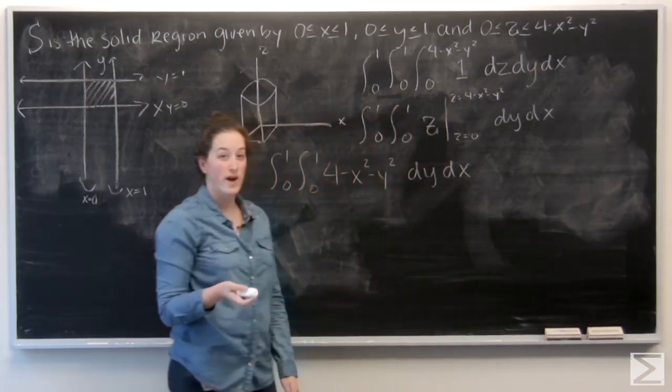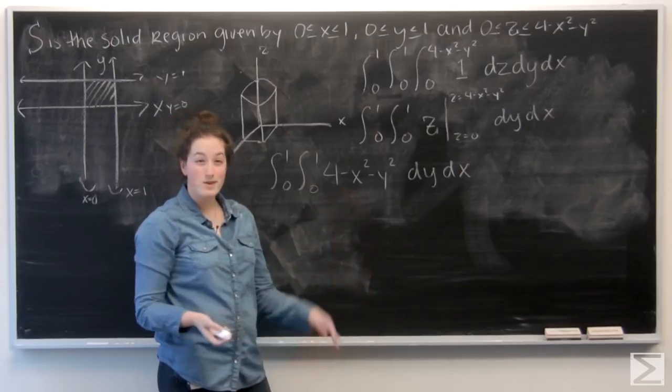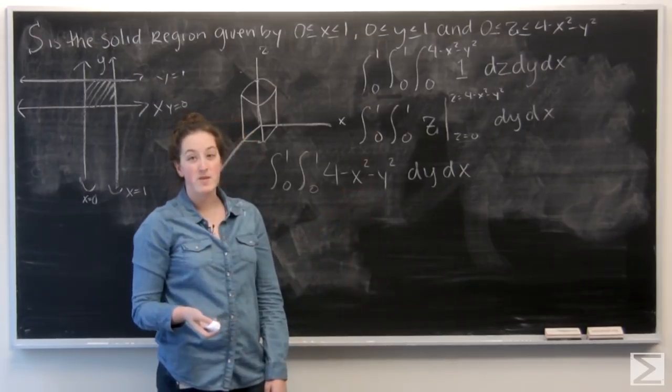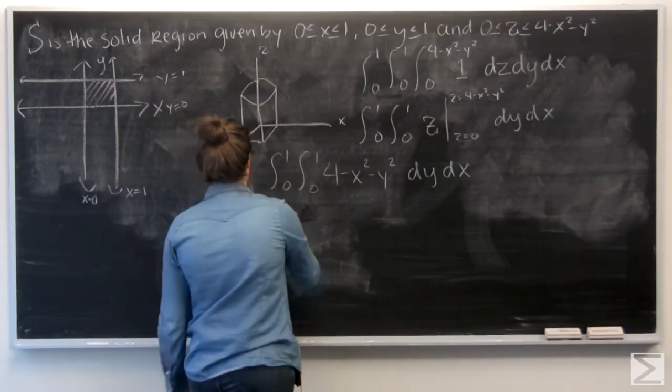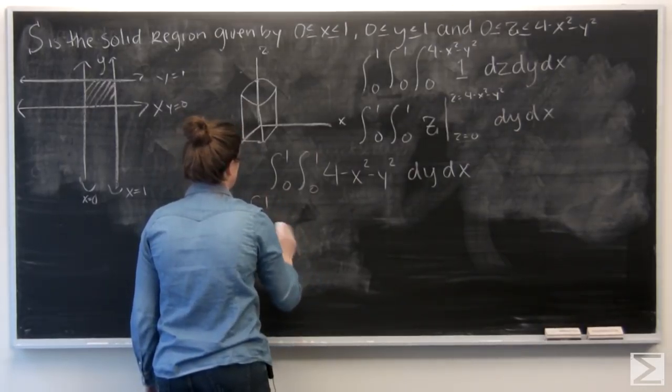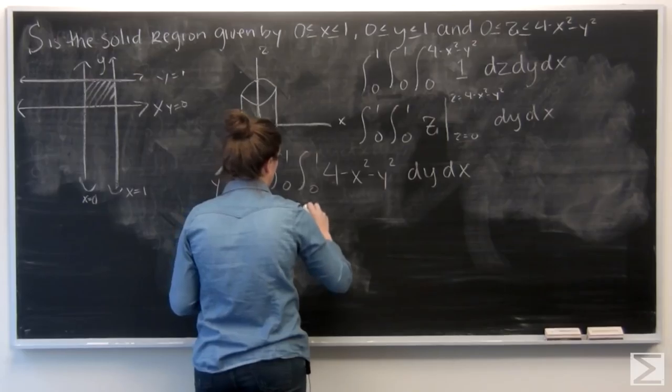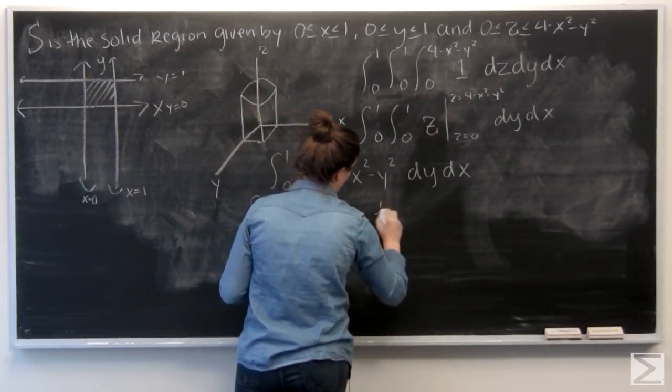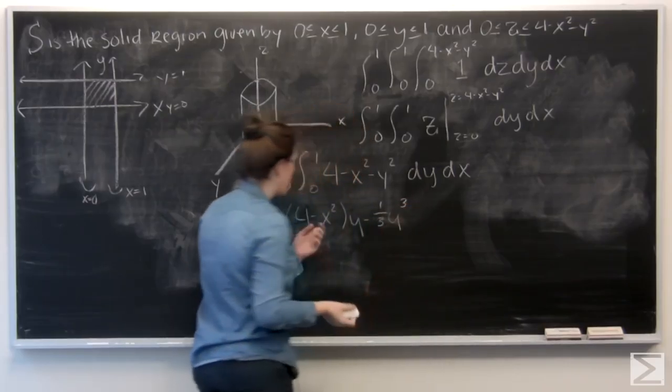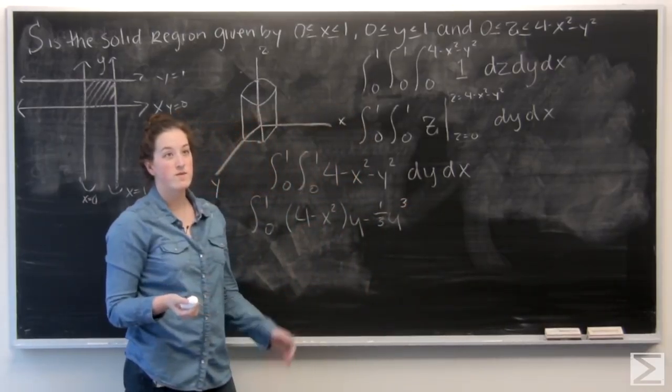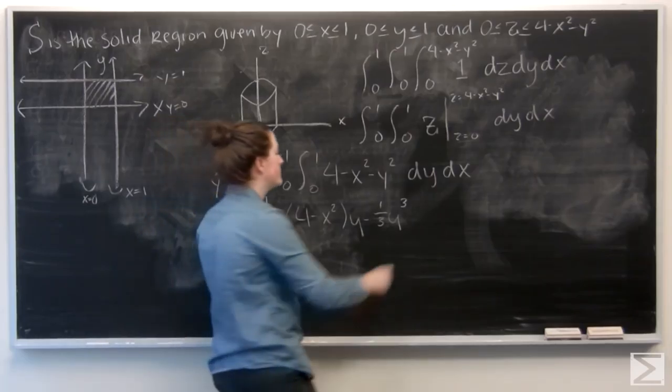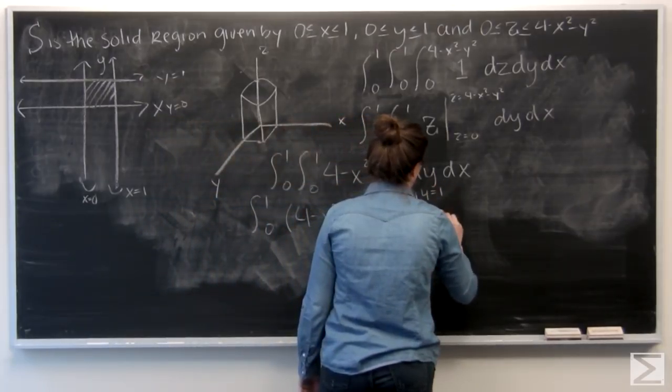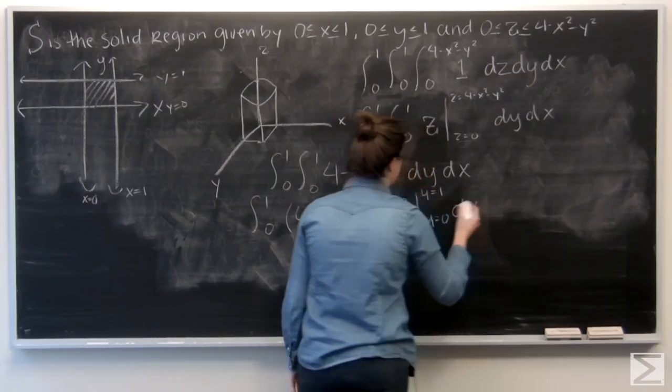Now I'm ready to integrate with respect to y. So 4 minus x squared is just going to be a constant. And then y squared is going to become 1 third y to the third. Now I want to evaluate that from y equals 0 to y equals 1.